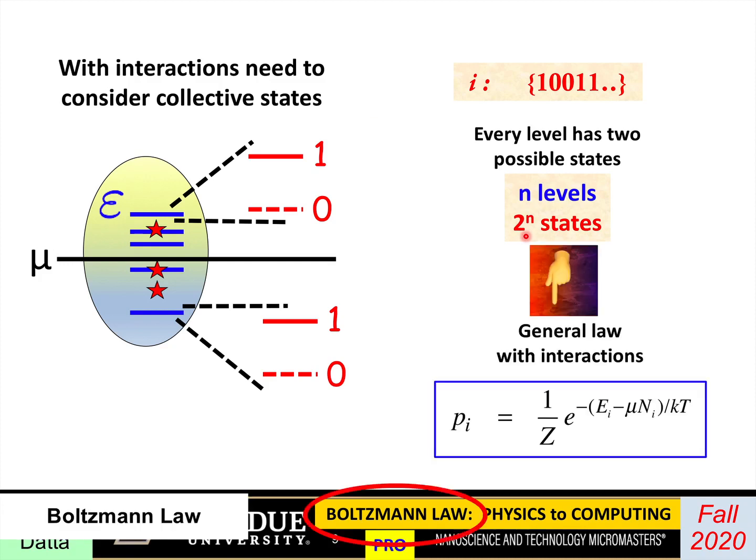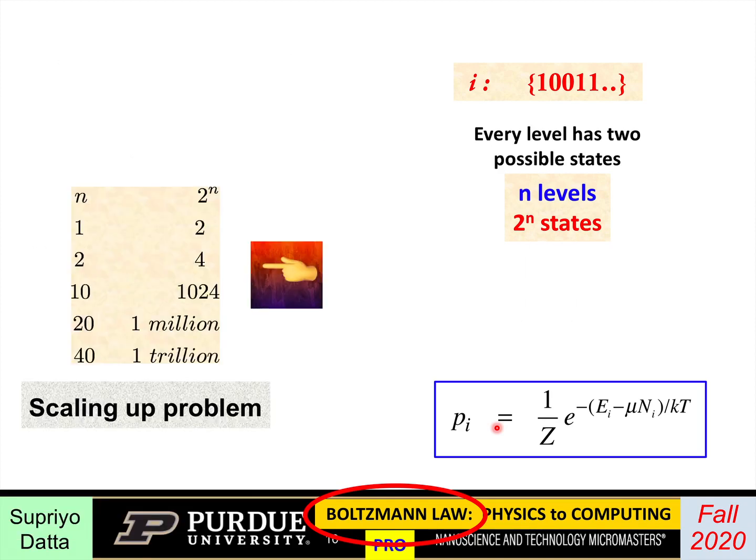The Boltzmann law, which is the general law obeyed by all systems in equilibrium, is that the probability that the system will be in a given state i is given by this function. This law is really in this 2 to the n space. One important point I wanted to stress is the distinction between the n space and the 2 to the n space. Now, this is important because, as n increases, this 2 to the n increases exponentially. So if you had 10 levels, there would be like about 1,000 configurations. 20 levels, a million. 40 levels, a trillion. So it goes up in a hurry.